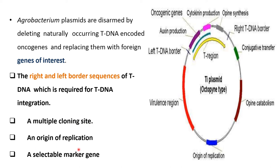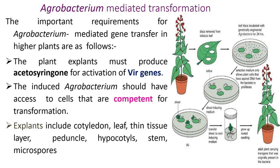The left and right border sequences of T-DNA are required for T-DNA integration. A multiple cloning site, origin of replication, and selectable marker are also required. The important requirements for Agrobacterium-mediated gene transformation in higher plants are: the plant explant must produce acetosyringone for activation of vir genes, and the induced Agrobacterium should have access to cells that are competent for transformation. Explants include cotyledon, leaf, thin tissue layer, peduncle, hypocotyl, stem, and microspores.